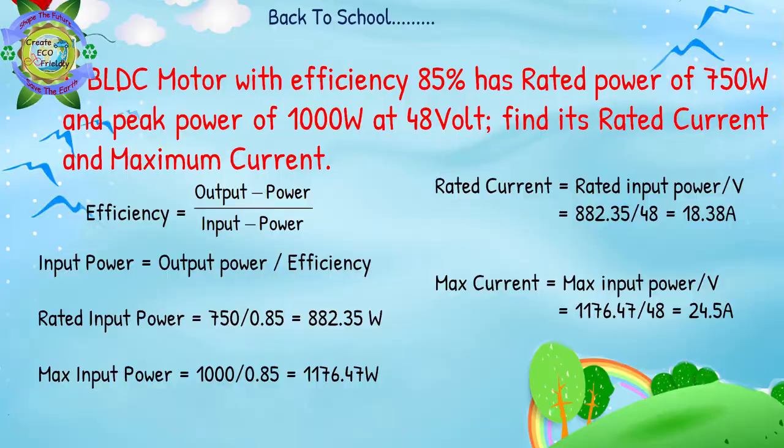देखो अगर voltage ज़्यादा होंगे तो current कम हो जाएगा और distance travelled by motor भी बढ़ जाएगा — थोड़ी efficiency बढ़ जाएगी। Maximum current = maximum input power / voltage = 1176.5 / 48 ≈ 24.5 ampere। अब आप 72 volt के लिए current की calculations करें और comment में answer बताएं।